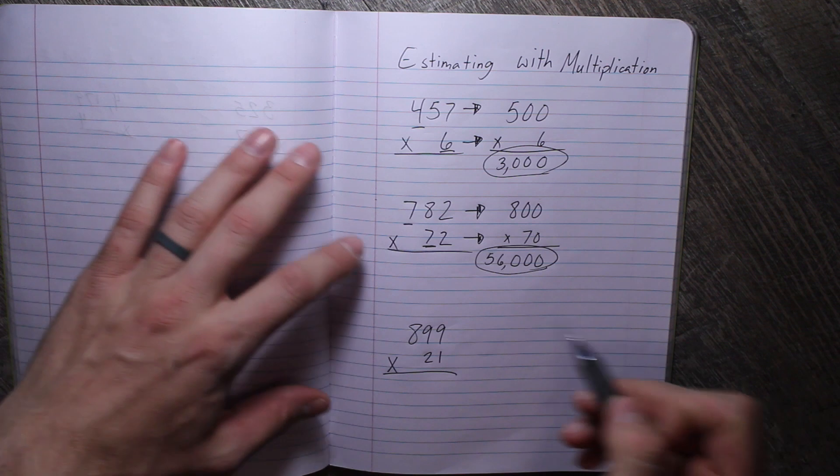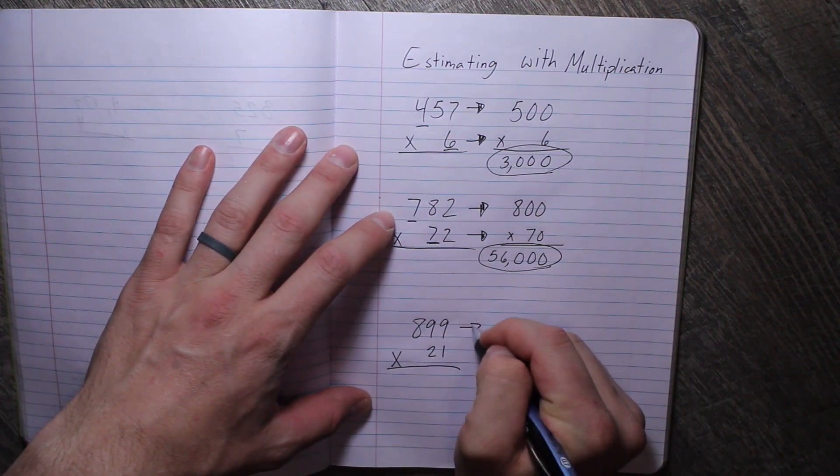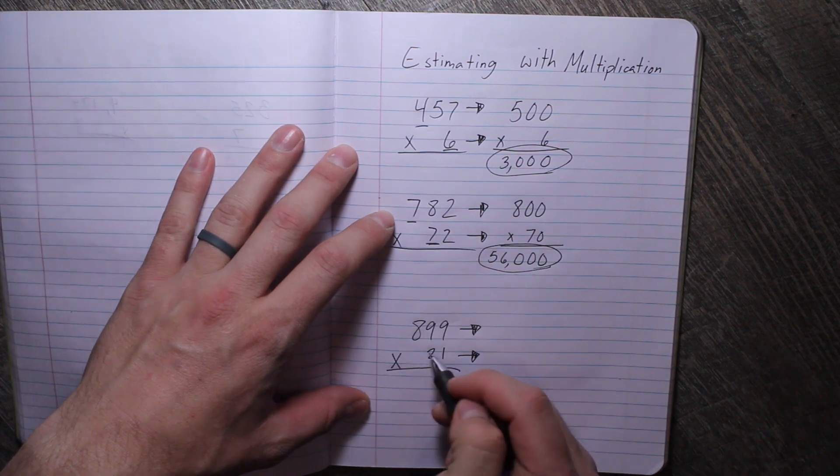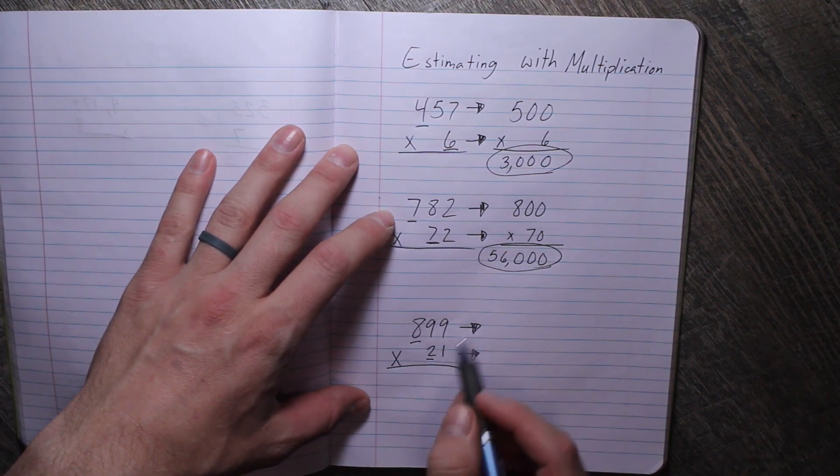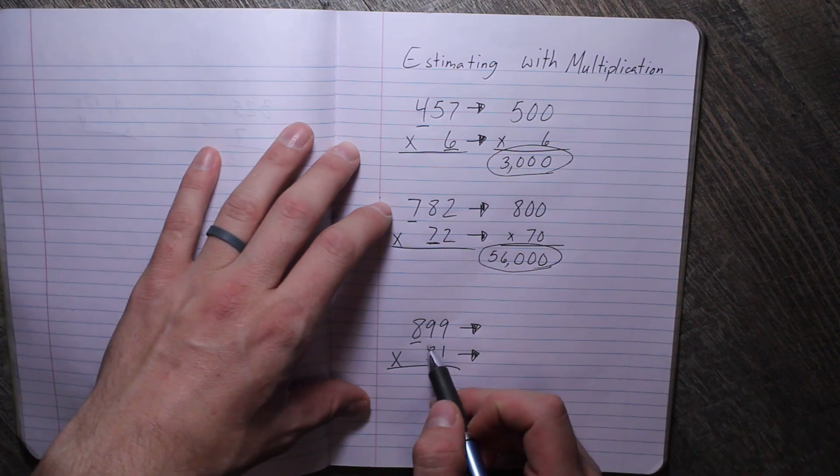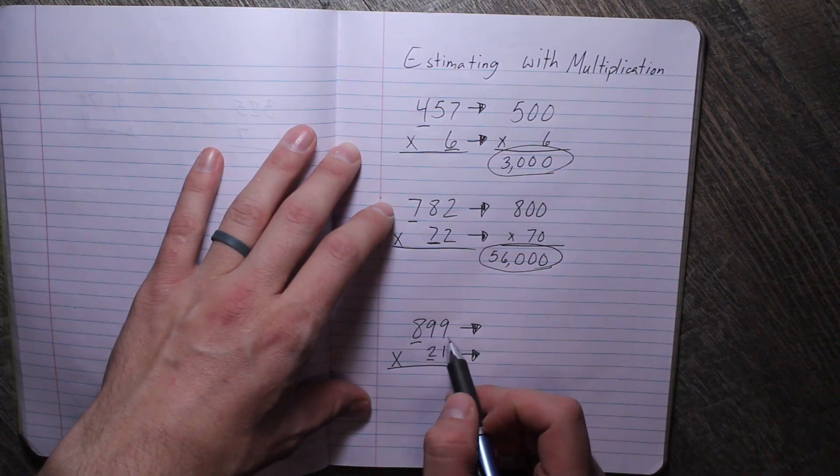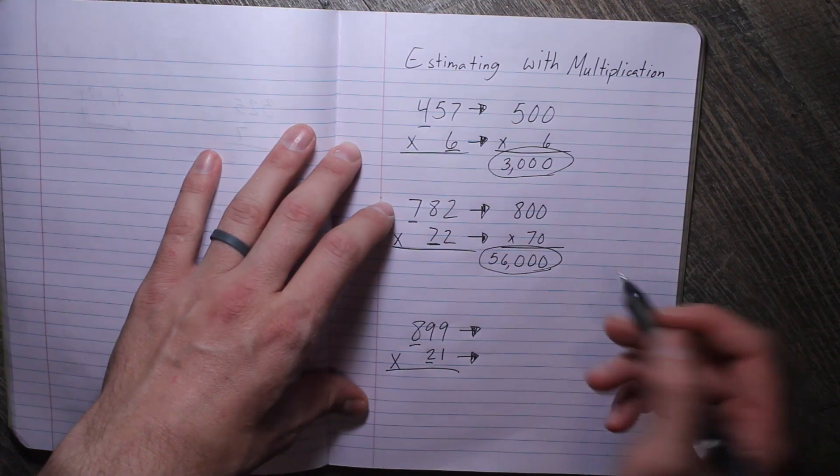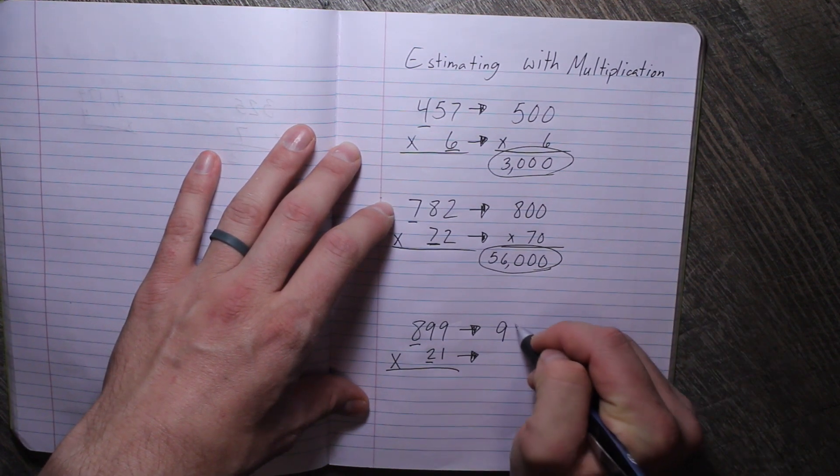Okay, hopefully you've paused and we're ready to move on. All right, so we're going to round this one again to the largest place value of each factor. The largest place value here is 800. So is 899 closer to 800 or 900? Well, it's one away from 900, so it's very close to 900.